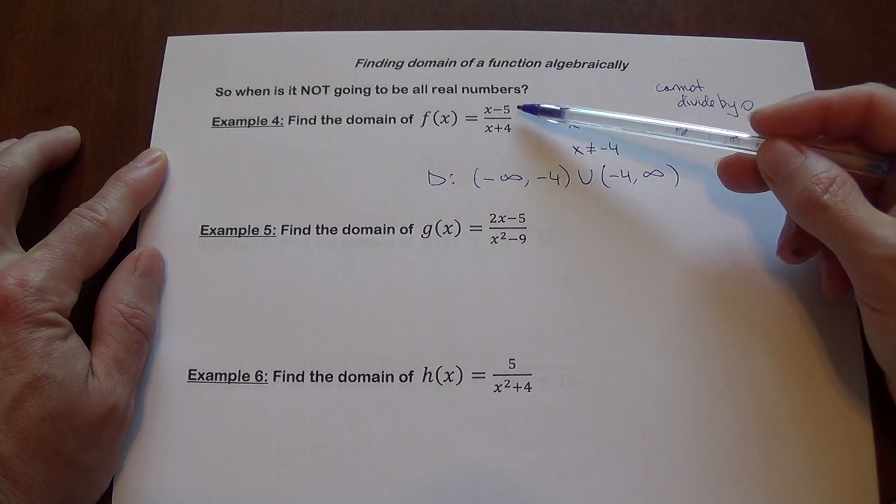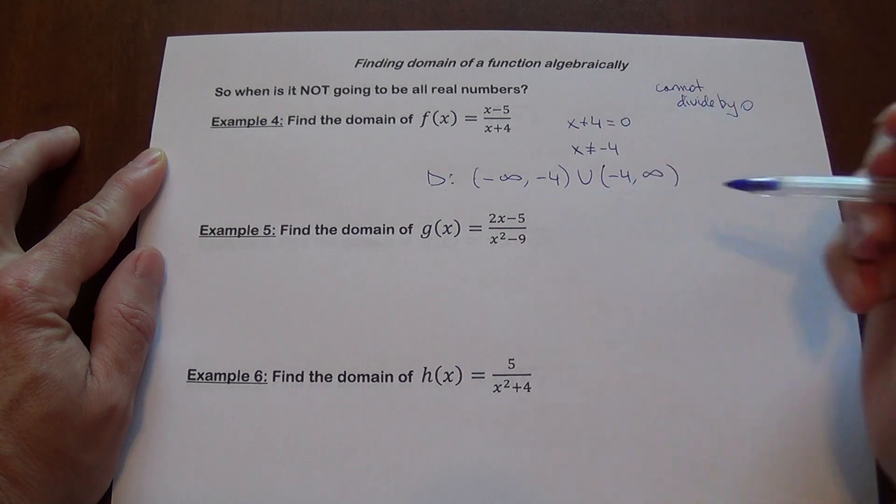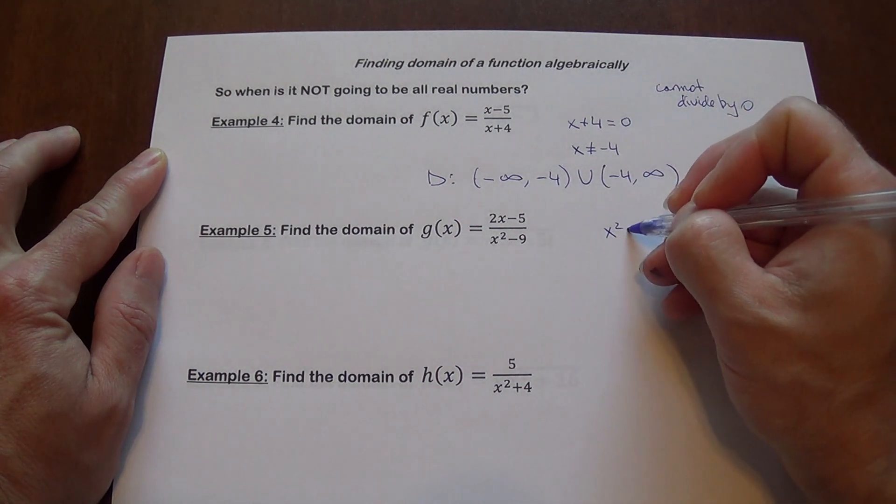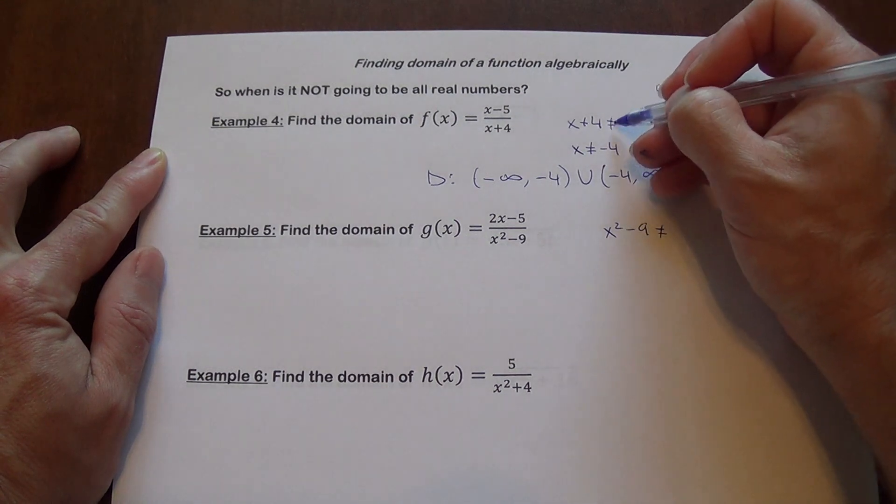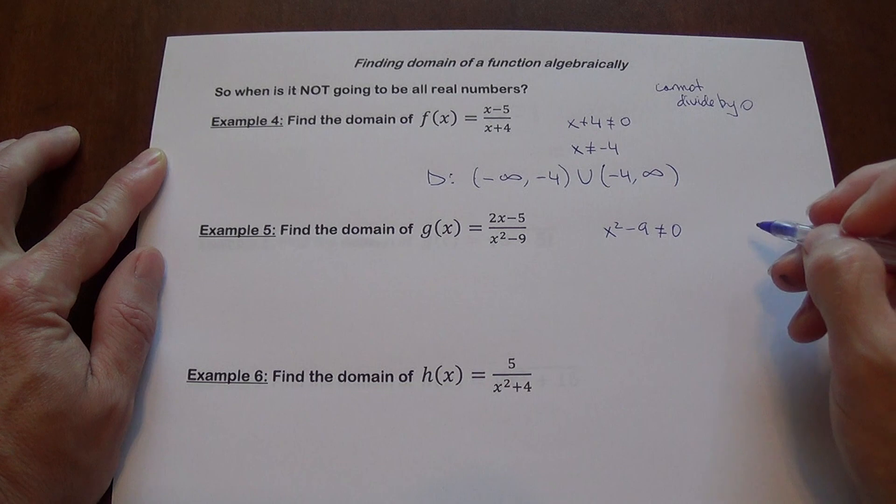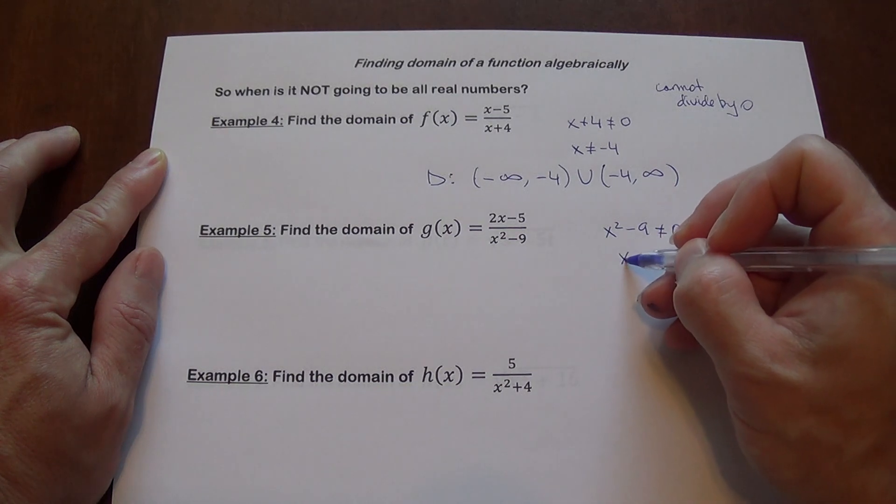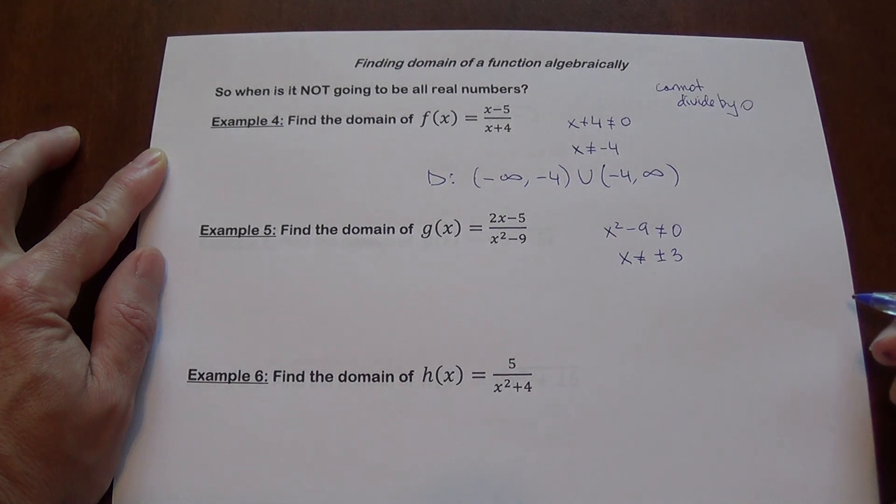By the way, a common mistake. The numerator does not concern us. If we get zero in the numerator, that's fine. Absolutely no problem. So here, what we want is x squared minus 9 not to equal zero. I'm not going to go through solving this inequality. You are going to get two values. x cannot equal plus or minus 3.